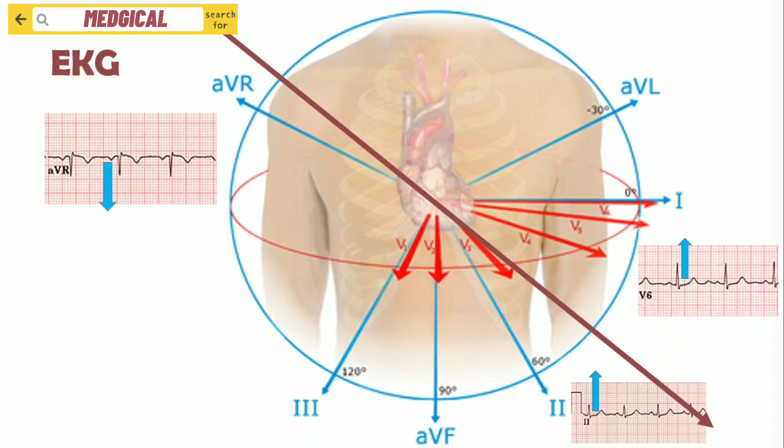The principle is the same with the leads of EKG — they all watch the same phenomenon but their positions are different. The car represents the electrical activity of the heart. You can see the arrow, which is the electrical axis of the heart. This electrical activity is always away from AVR, so in AVR we always have a negative deflection of R wave. It is always towards V6, Lead 2, 3, and AVF, so they have a positive R wave.